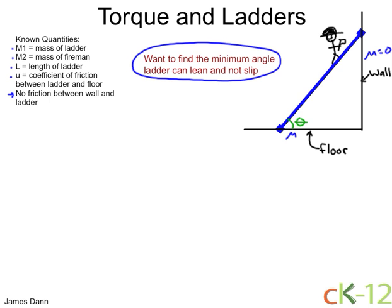The first thing to do, as always, is to identify and label the forces, both their direction and what they are. Let's start with the ladder. The ladder has mass, and gravity always acts at the center of mass and points downwards. That's m1g, force of gravity equals mass times the acceleration of gravity. The fireman also has mass, and that's m2g.